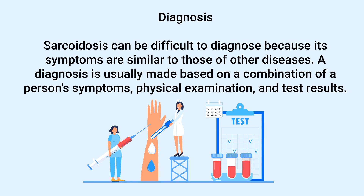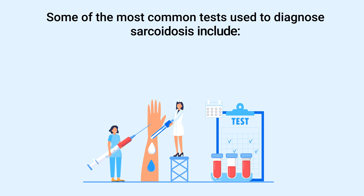Each person experiences symptoms differently. Some people have mild symptoms that go away on their own, while others may experience more severe symptoms that require medical intervention. Now let's talk about the diagnosis. Sarcoidosis can be difficult to diagnose because its symptoms are similar to those of other diseases. A diagnosis is usually made based on a combination of a person's symptoms, physical examination, and test results.